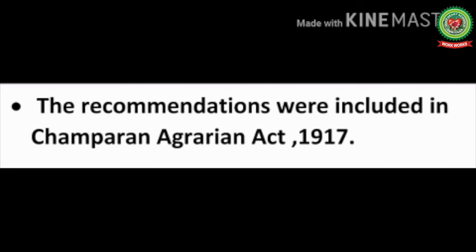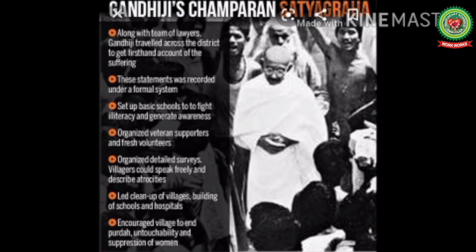All the recommendations of the Champaran Agrarian Committee were included in the Champaran Agrarian Act of 1917. Mahatma Gandhi was successful in solving the problems of the peasants of Champaran, and this was the time he grew as a national leader. In Champaran, he not only raised the issue of indigo prices but also inspired people to end untouchability, work for women's education, started elementary schools in villages, and worked for cleanliness.